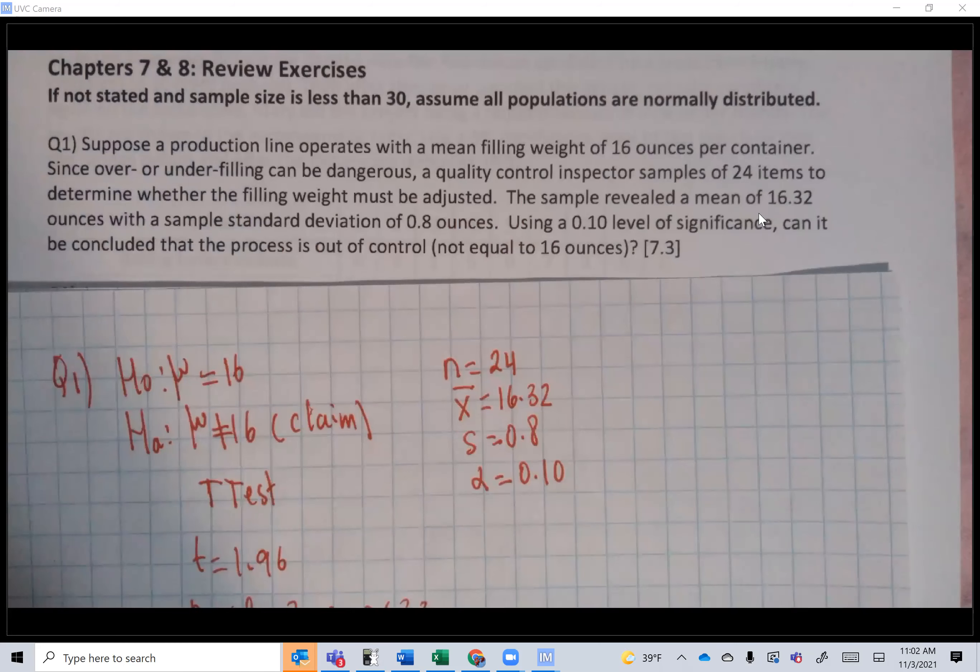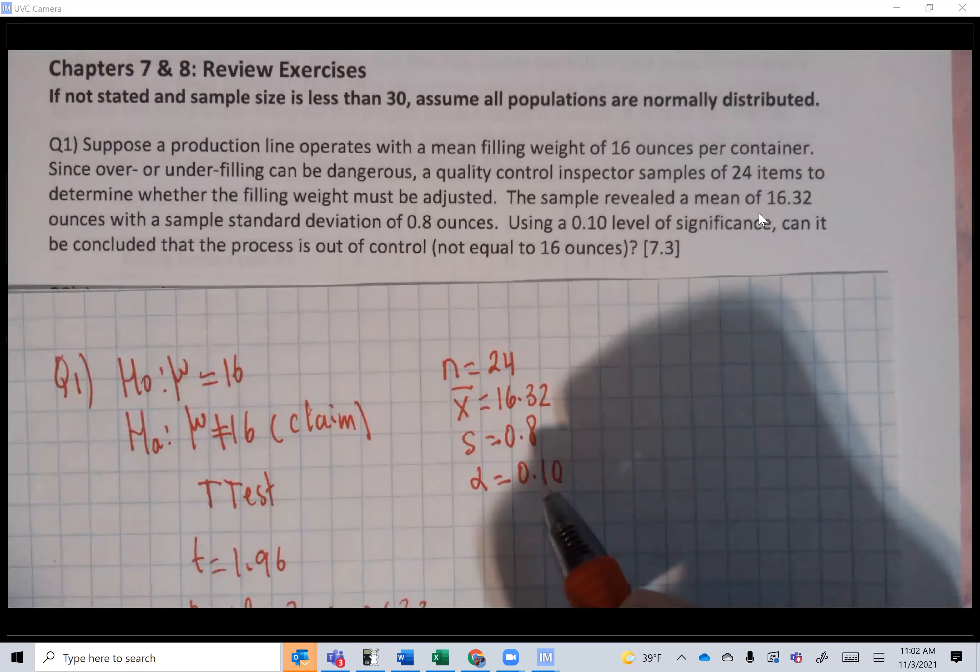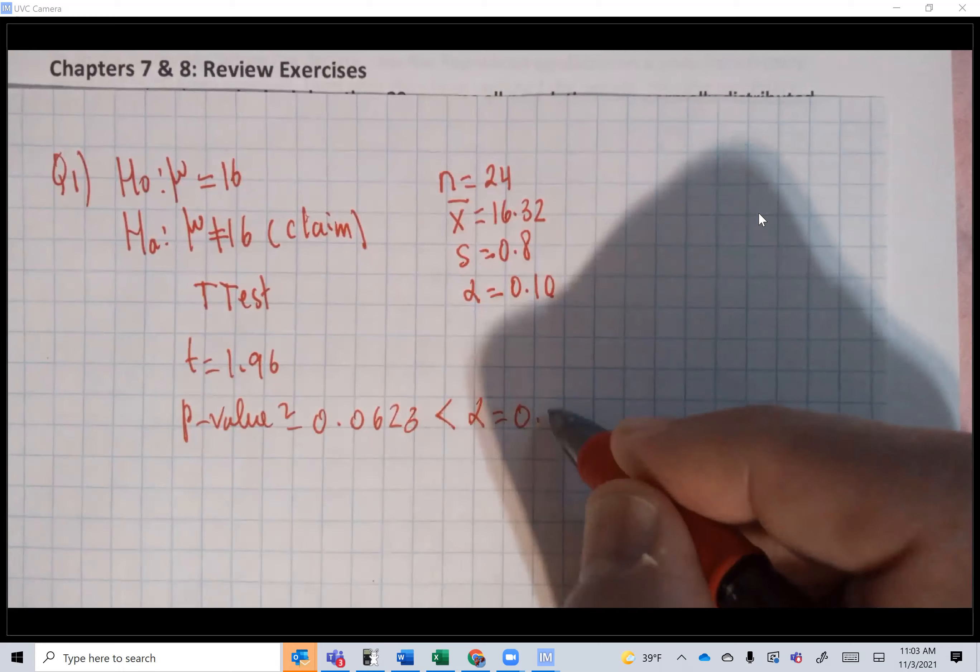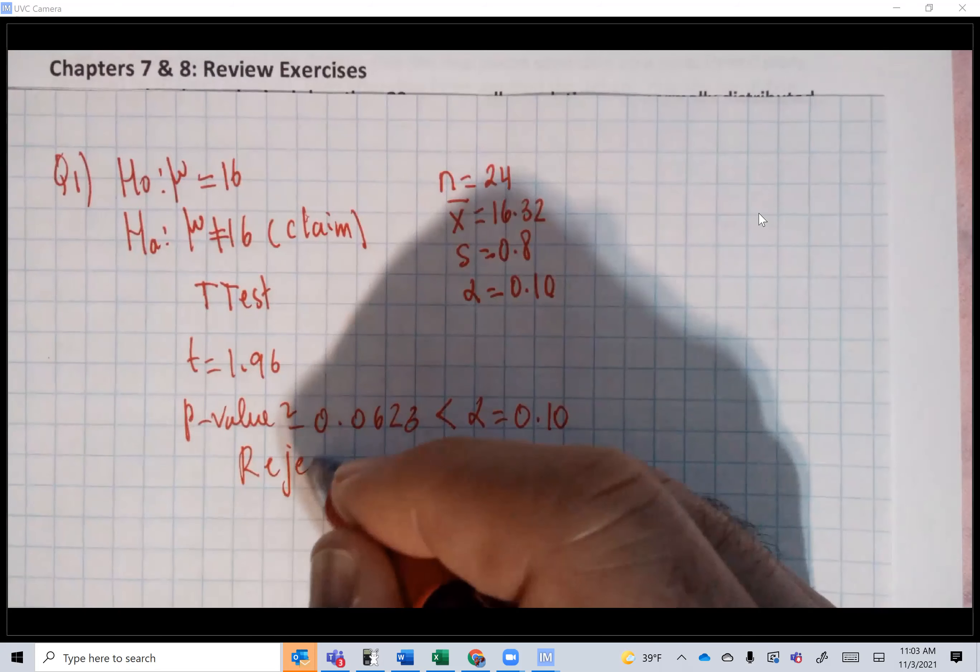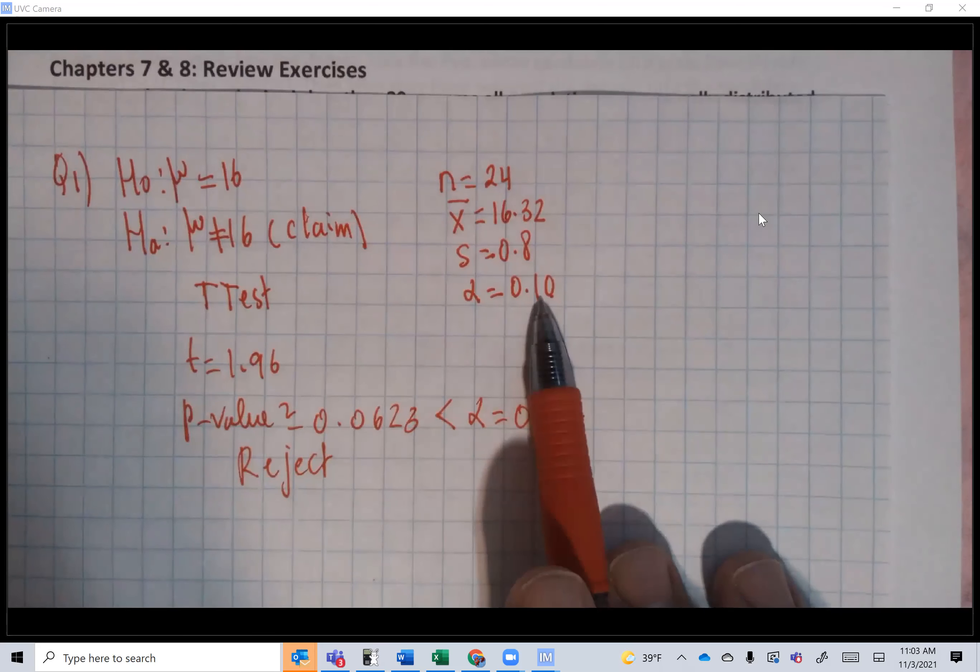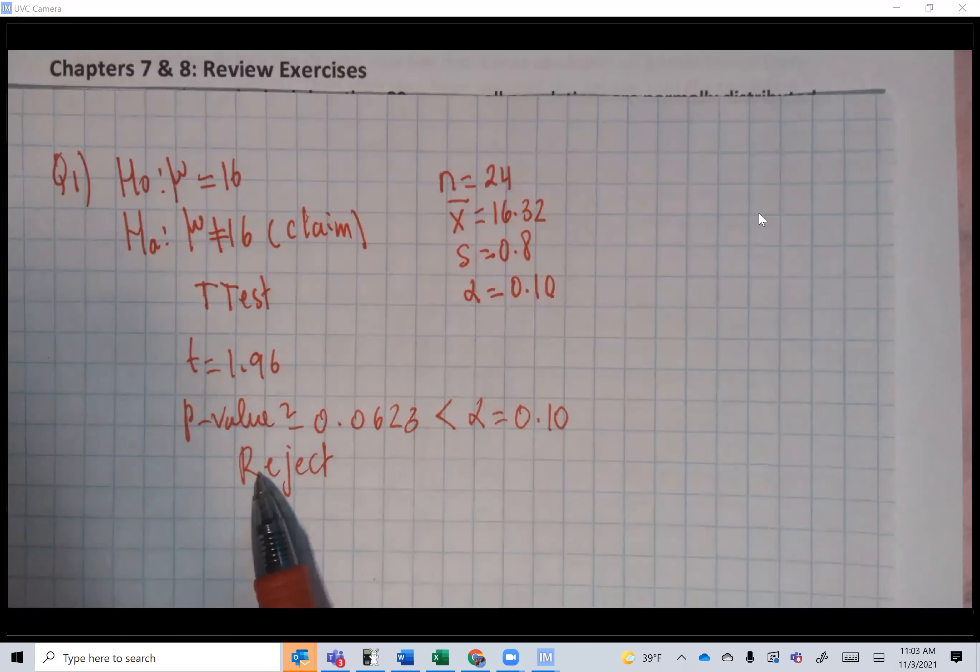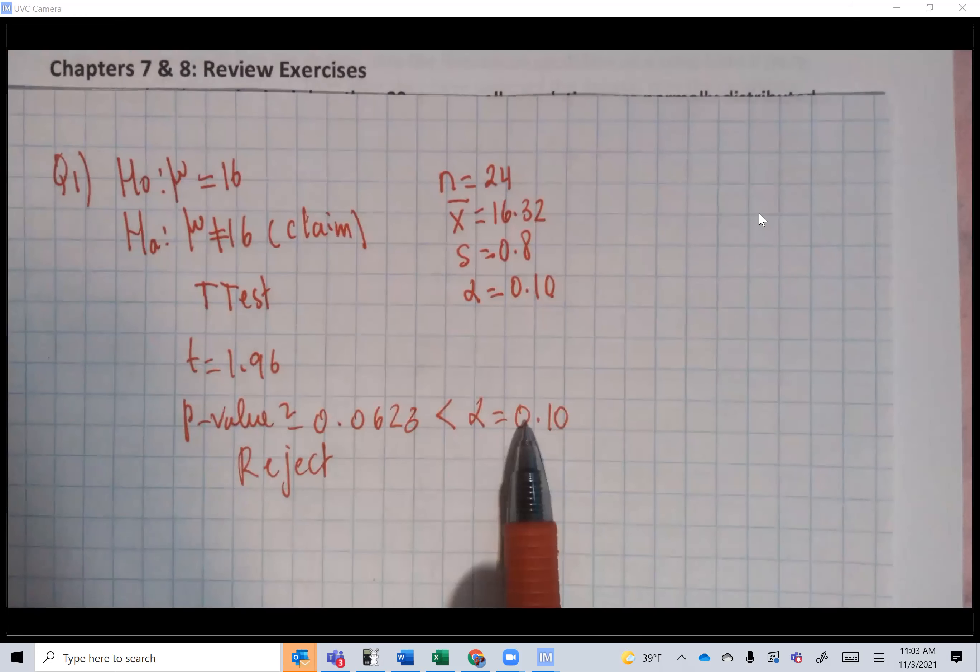And now what is alpha? Alpha is 10%. We're going to reject H0. If it was 5%, I could give you the same exact problem. Then you'd fail to reject H0. But because alpha is big, 6% is less than 10%, you reject H0.